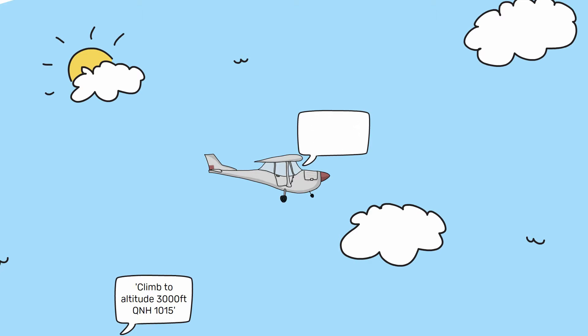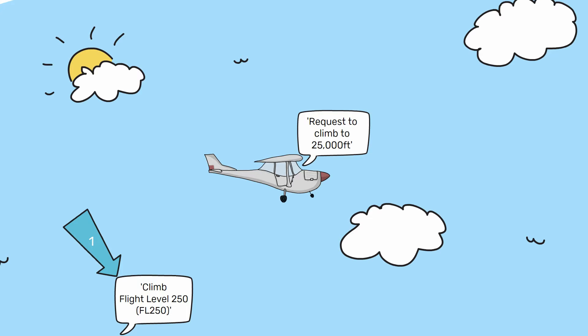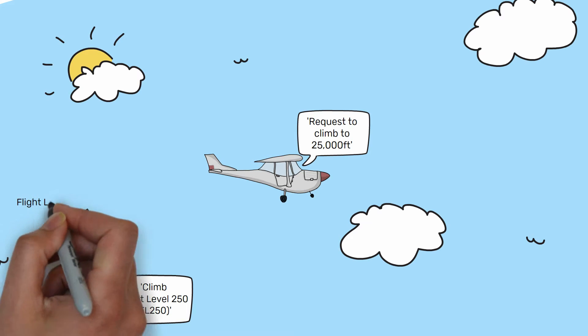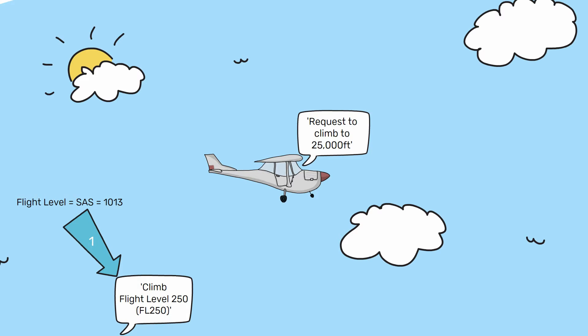Now you've completed your general handling and wish to climb past the transition level to 25000ft. The air traffic controller may say something along the lines of: climb flight level 250. There are a few important points to note here. Firstly, you may have noticed that the controller didn't specify a pressure. This is because flight level is only said when using standard altimeter setting, or SAS, which is always an altimeter pressure of 1013. When an air traffic controller instructs you to climb to a flight level, this is also a request to set 1013 on your altimeter. Secondly, you may have noticed that the controller did not say 25000ft, and instead said 250.